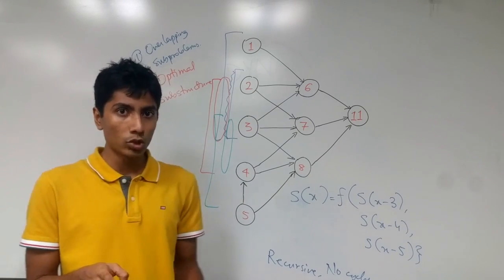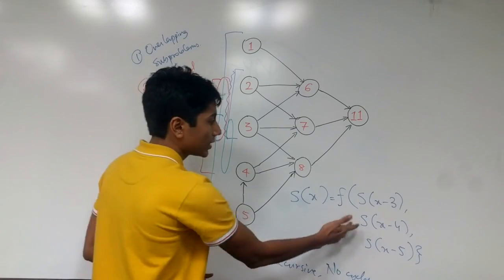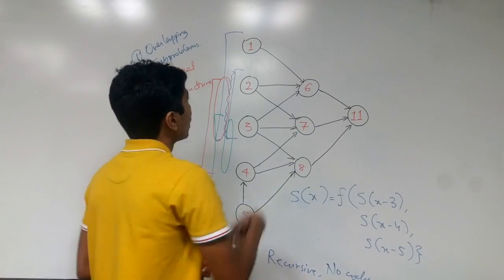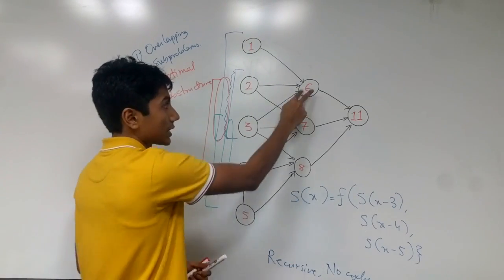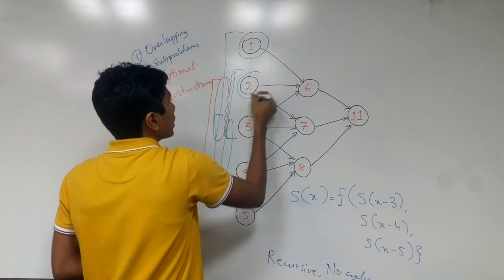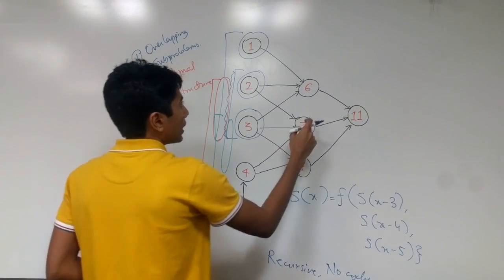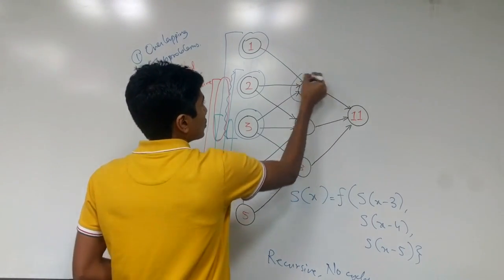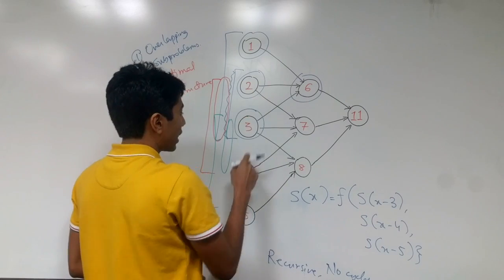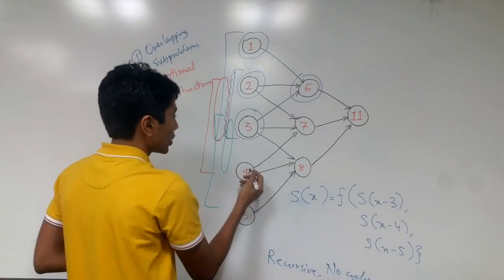The final thing about dynamic programming is that if you need to find out the value of a state, let's say 11, that's the answer we want. There are two ways to do this. One is to go to 11, say that we need three states: 6, 7, and 8 need to be computed. Then we come to 1, 2, and 3 because 6 needs to be computed now. These three are computed, so we store them in some sort of a map, some sort of a data structure.